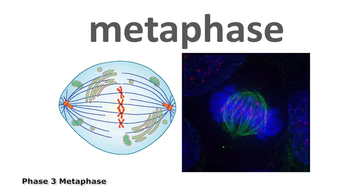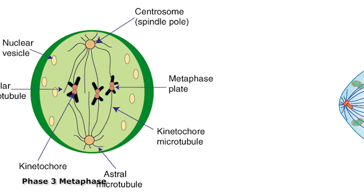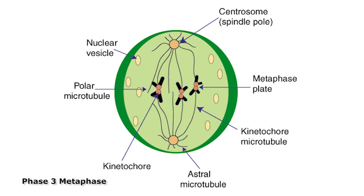Phase 3 is metaphase. During metaphase, the nuclear envelope breaks down, and the spindle fibers attach to the sister chromatids.